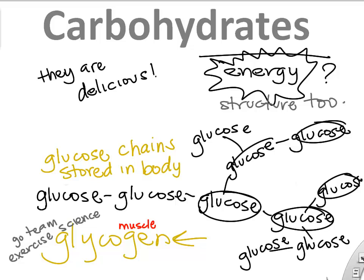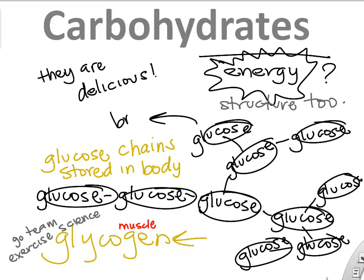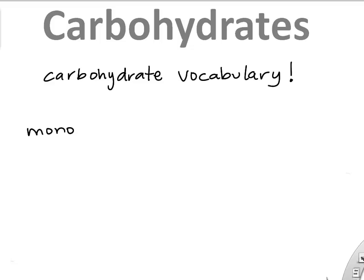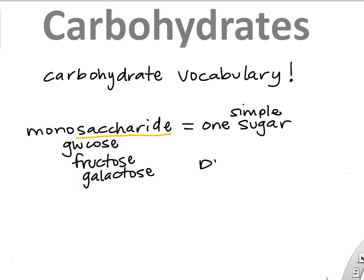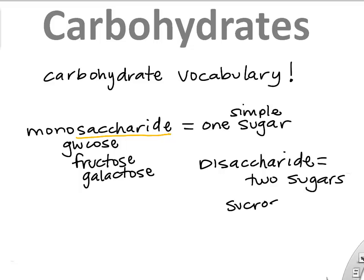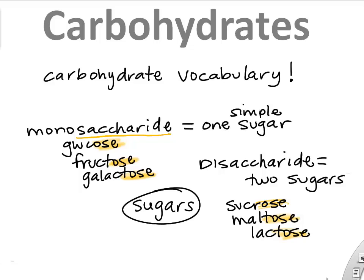Glucose is a great energy molecule our cells can turn into cellular energy called ATP. Glucose can be chained together and stored inside the body in the liver and muscles — we call that glycogen. Your body can break glycogen back down into glucose when you exercise. Carbohydrate vocabulary: monosaccharides equal one sugar — famous examples are glucose, fructose, and galactose. Disaccharides are two sugars bonded together, like sucrose, maltose, and lactose.